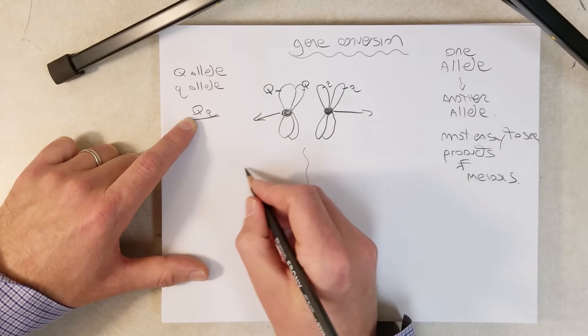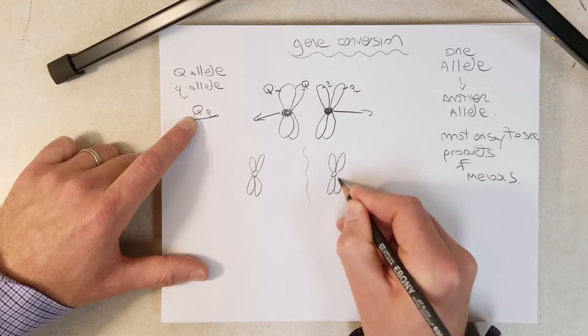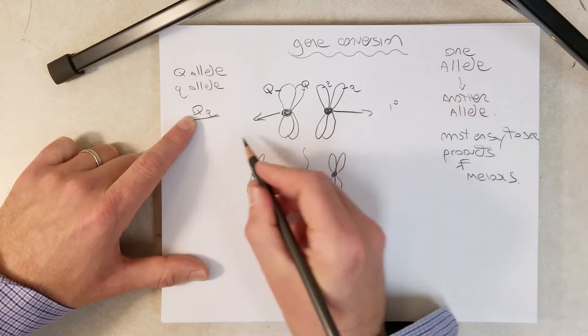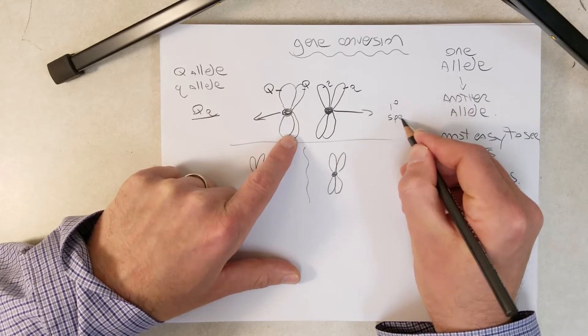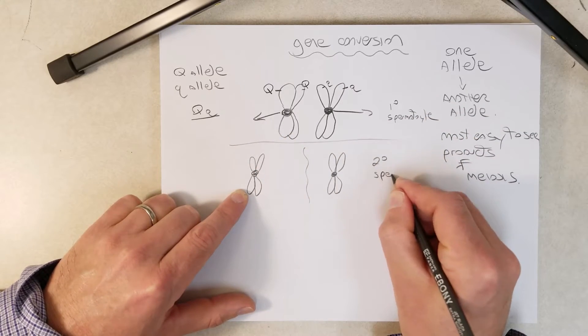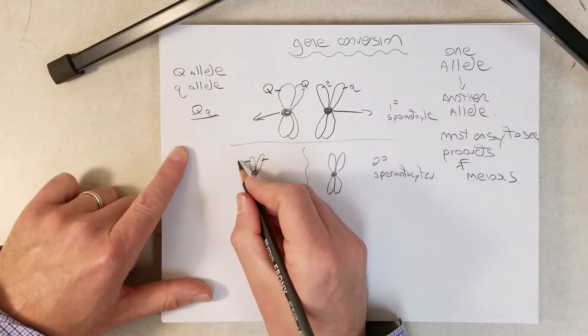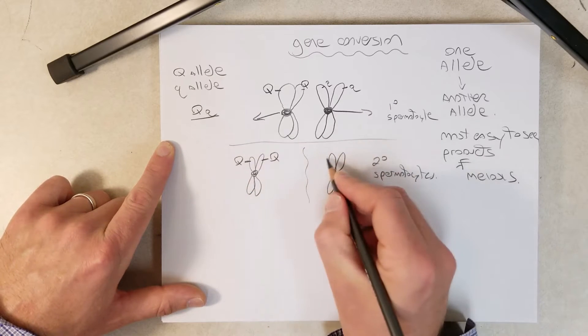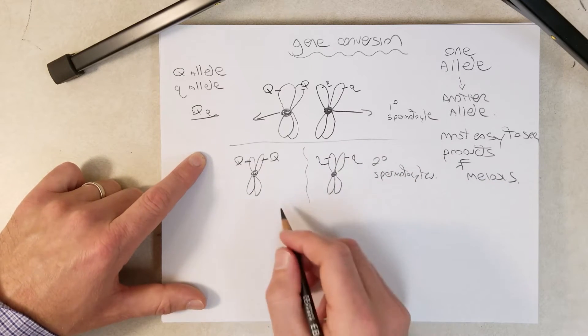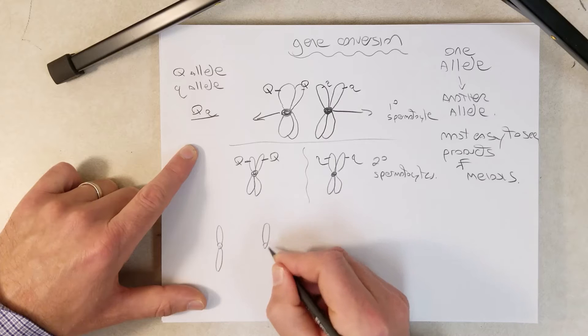Now what would happen next? Going back to introductory genetics and introductory biology, so meiosis, what happens during the first stage of meiosis? The homologous chromosomes separate. So this one's going to go this way, this one's going to go that way.